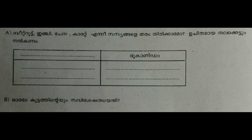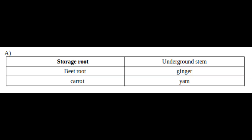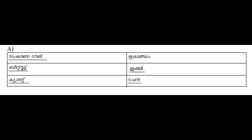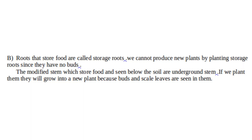Beetroot, ginger, yam, and carrot — these are placed into two boxes. The root is a storage root. The root is also an underground root. The root structure into the root is an underground root.